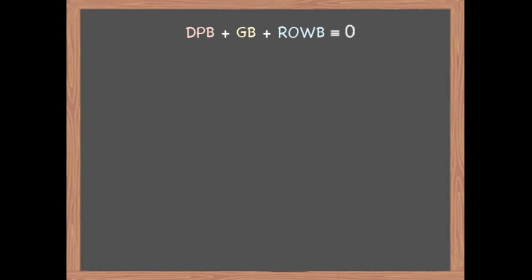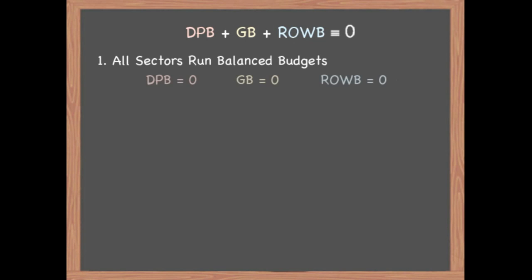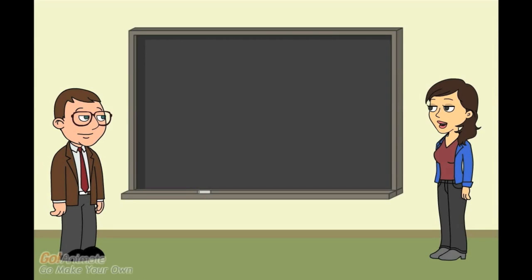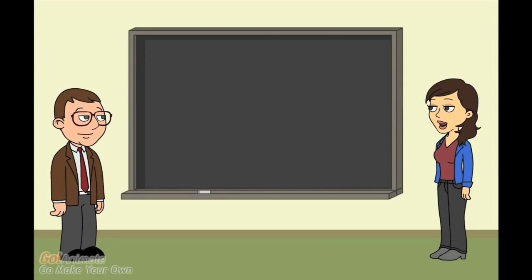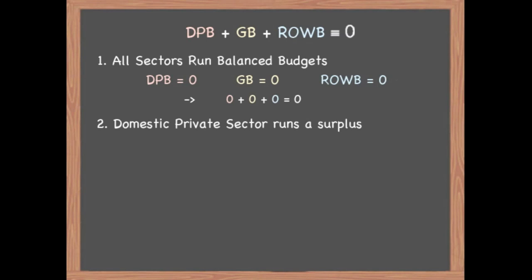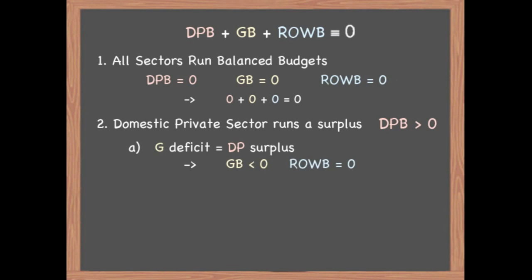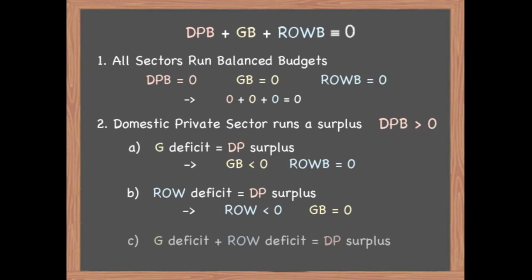This accounting identity gives us some important insights. First, if all sectors run balanced budgets the identity will hold, meaning all three balances equal zero. What must be true if one sector is running a surplus? Another sector must be running a deficit — it is impossible for all three sectors to be in surplus at the same time. For example, if the domestic private sector is running a surplus, one option could be that the government sector runs a deficit equal to that surplus and the rest of the world balance equals zero. Conversely, the rest of the world could run a deficit equal to the domestic private sector's surplus while the government runs a balanced budget.